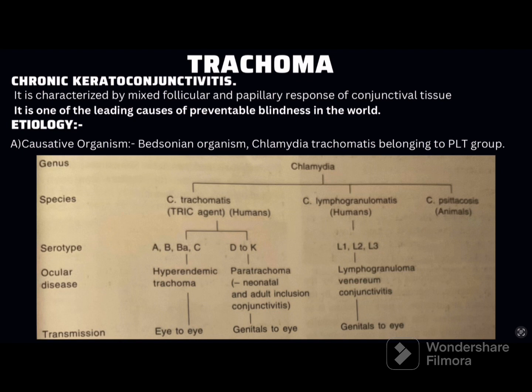Kerato means cornea and conjunctivitis means involving the conjunctiva — so trachoma involves both cornea and conjunctiva. It is characterized by a mixed follicular as well as papillary response of the conjunctival tissue. Trachoma is one of the leading causes of preventable blindness in the world. In Greek, trachoma means 'rough,' which describes the surface appearance of the conjunctiva in chronic trachoma.